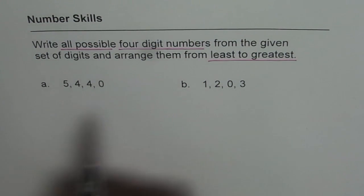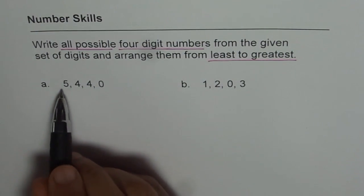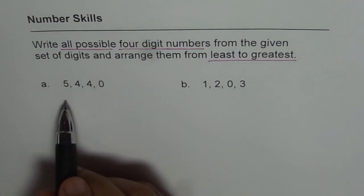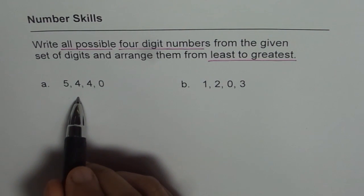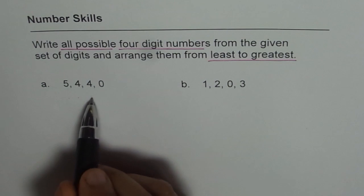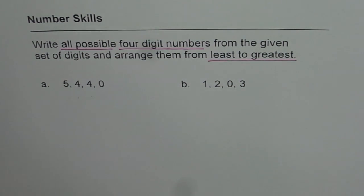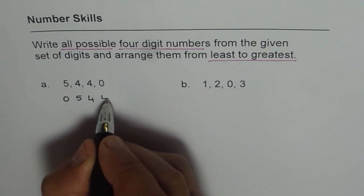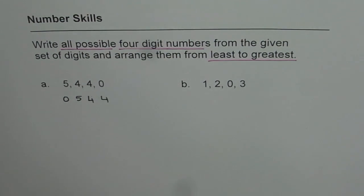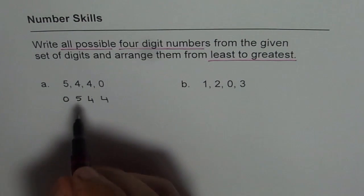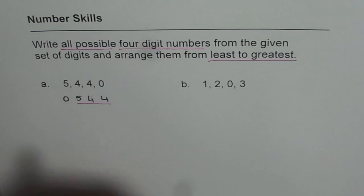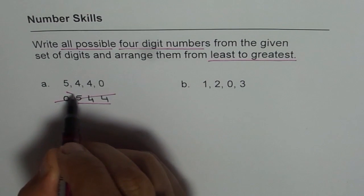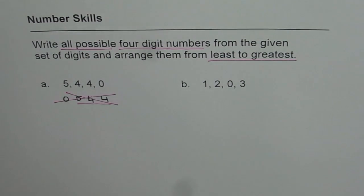Now we have to write from least to greatest. Out of these digits, least one is zero. Can I start with zero? Well, if I start with zero, I get 0544. But that is actually a three digit number, right? If I write 0544, it is not a four digit number. In fact, there are only three digits, 544. So we cannot use this one, right? So let's cross this out. So that one is not possible. That means we cannot start with zero.